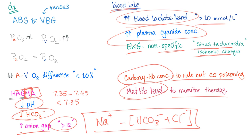Methemoglobin has pros and cons. The pros: it can treat cyanide poisoning. But we can't go too far, because too much methemoglobin can kill you.